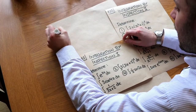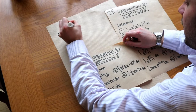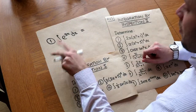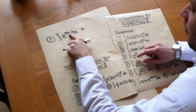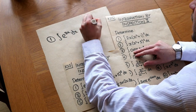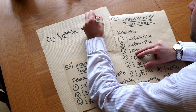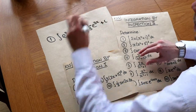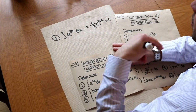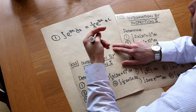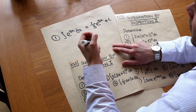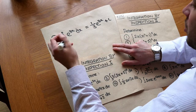If we wanted to integrate e to the 3x with respect to x, we just divide by the number in front of the x, so we'd end up with a third e to the 3x. Let's think about what exactly is happening here — we effectively want to use the chain rule backwards. The chain rule was a way of differentiating a function within a function.